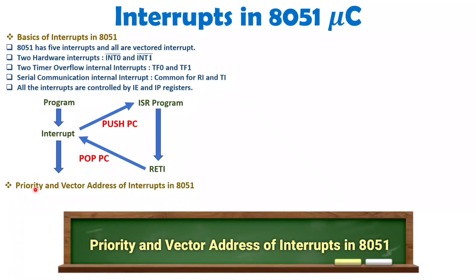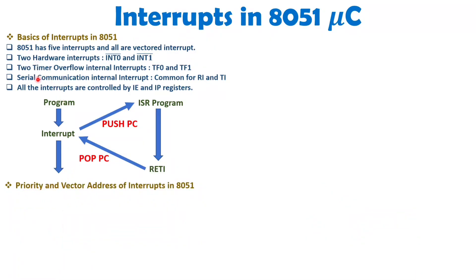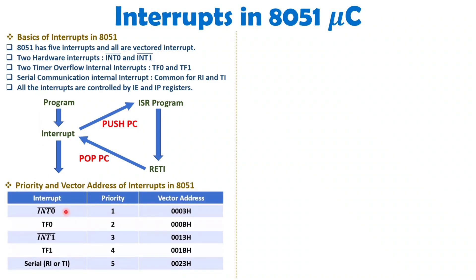Now I'll explain priority and vector addresses for all five interrupts. The priority order is: INT0 has the highest priority (1st), TF0 has 2nd priority, INT1 has 3rd priority, TF1 has 4th priority, and serial communication (RI/TI) has the lowest priority (5th).